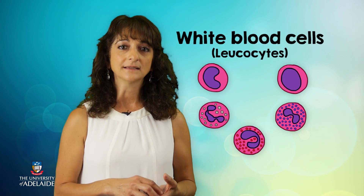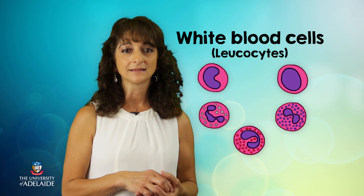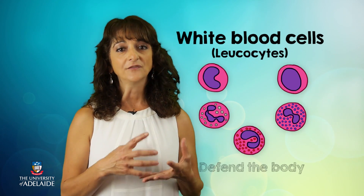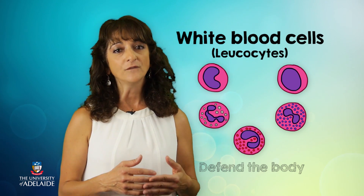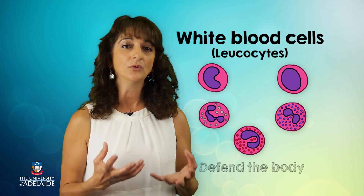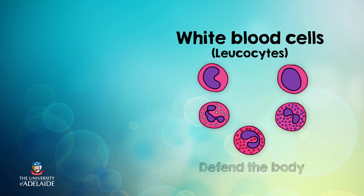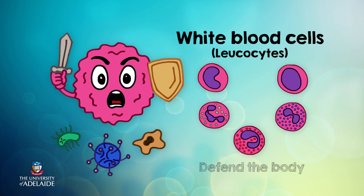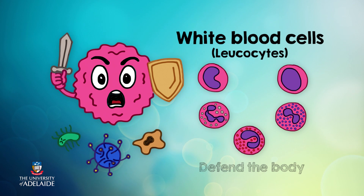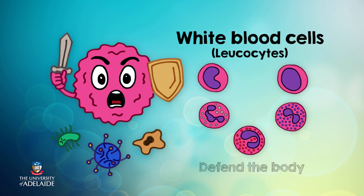White blood cells are the formed elements also known as leukocytes. They defend the body against disease and unwanted invaders and form a really important part of our immune system. They are true warriors, protecting us from disease and infection and helping with the elimination of unwanted visitors such as bacteria and viruses.